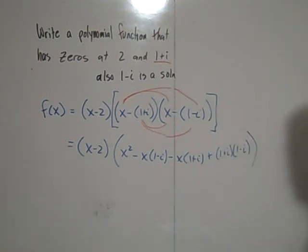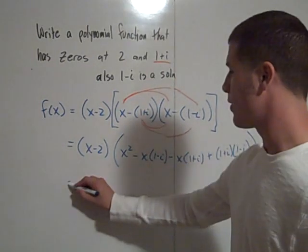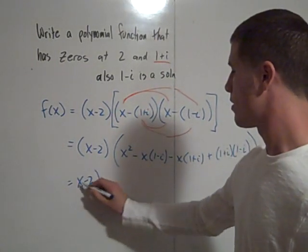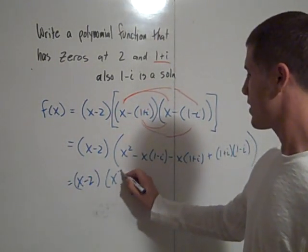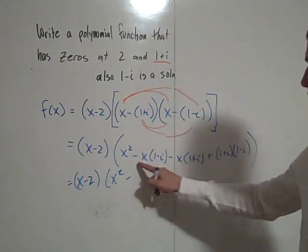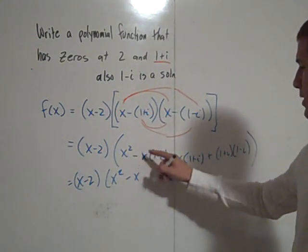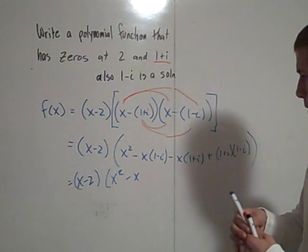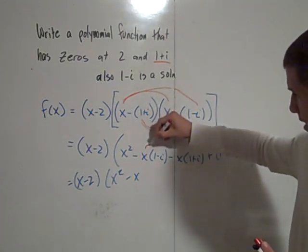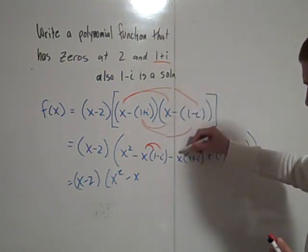All right, so it looks kind of messy, but everything will be okay in the end. So we have to keep simplifying. But we still have this x minus 2 out front. We have x squared minus x, because I'm distributing, I'm going to distribute this negative x to this and to this. Same goes here.